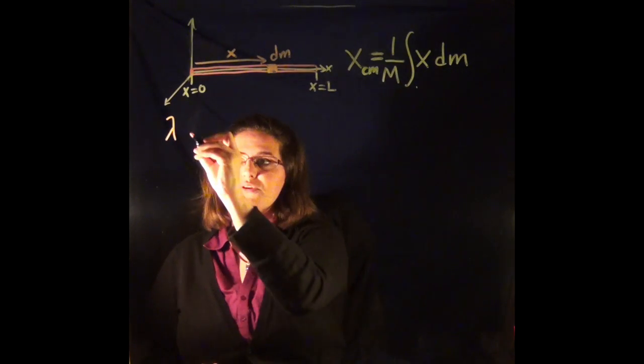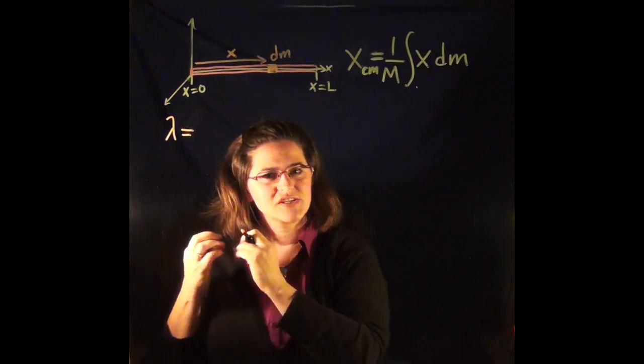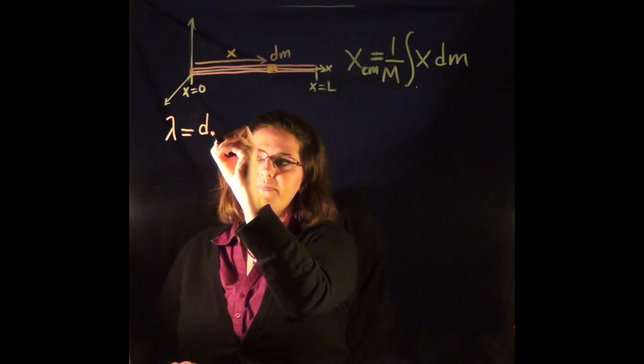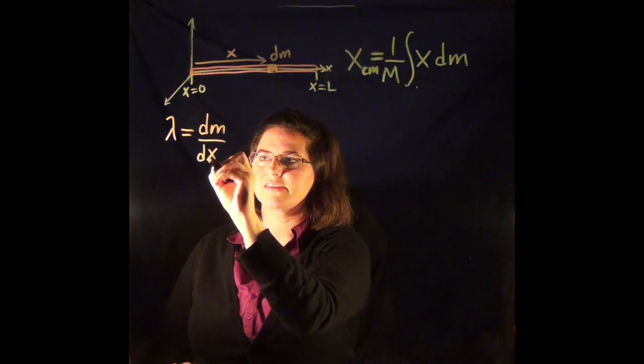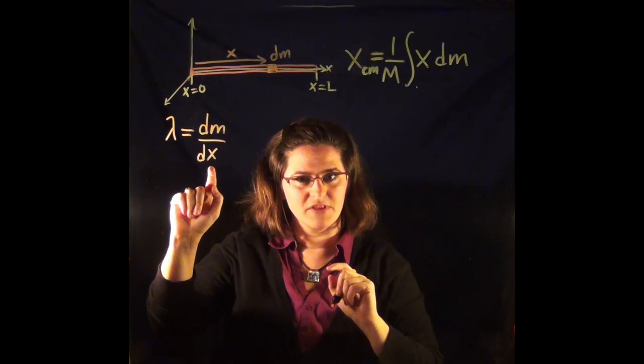So mass per length. It's just a tiny amount of mass per length. So we're going to say dm over dx. A little bit of mass over a little bit of length.